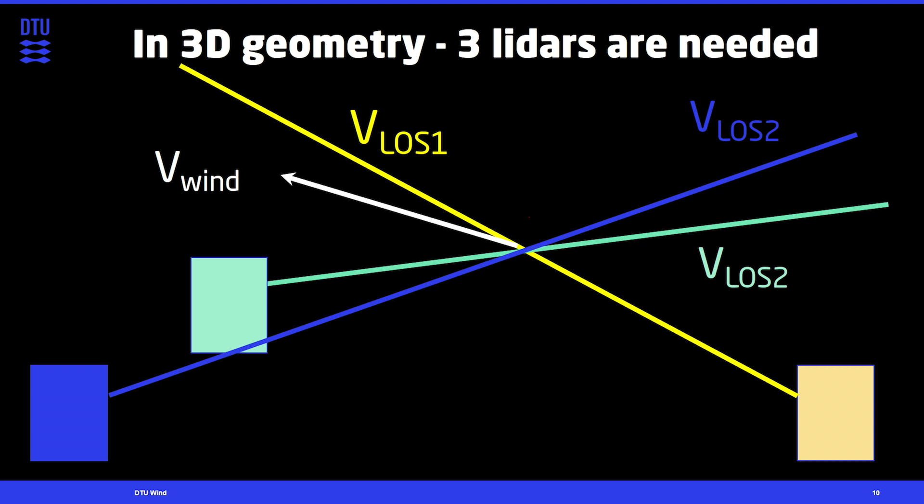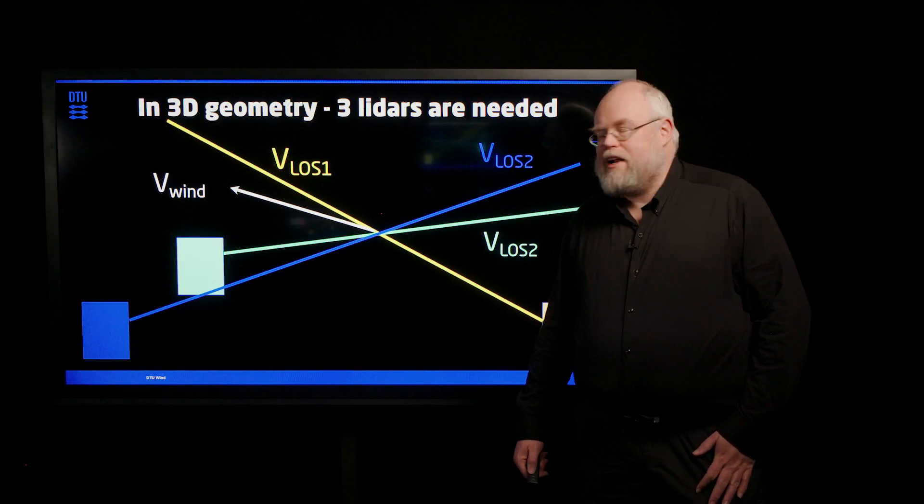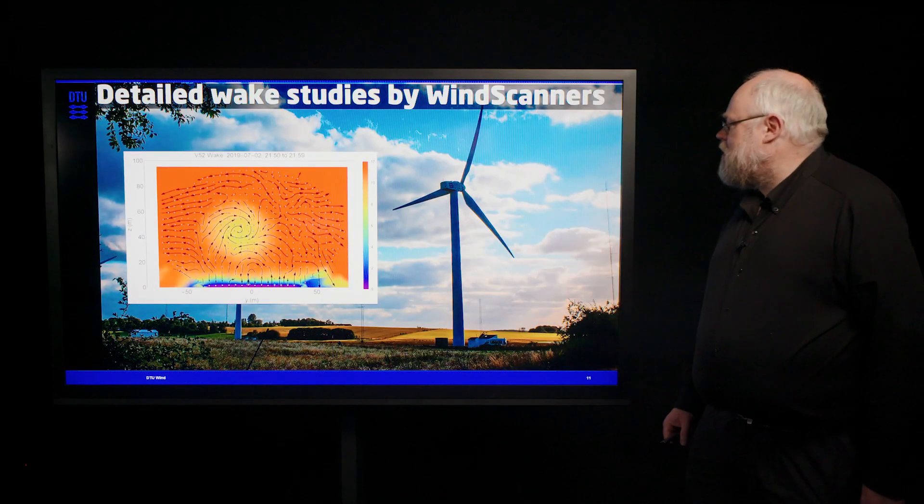But we just mentioned the 2D case. Of course, the obvious continuation of this is to go to three dimensions. And then you, in principle, need three lidars crossing in the same point. And an example of that we have here.